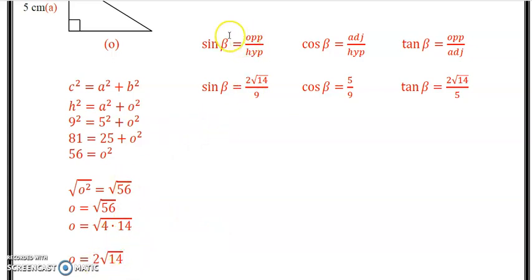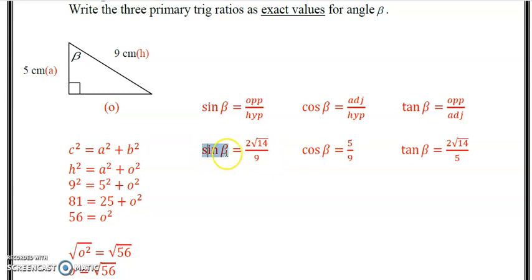So we find our three ratios. Sin beta equals opposite, which we just calculated, 2 root 14 over hypotenuse, which is 9. That's it. It's done. All we want to show is what the ratio is. And if we needed to calculate beta, we would. It would be the same for all of them. Cos would be adjacent over hypotenuse. We had those two sides, 5 ninths. Leave it. And then we have tan beta equals opposite over adjacent, and the opposite we calculated to be 2 root 14 over 5.